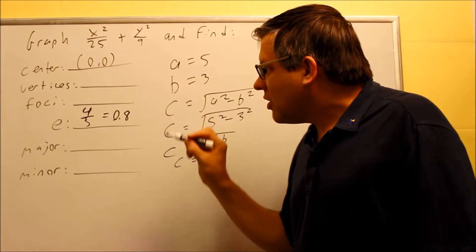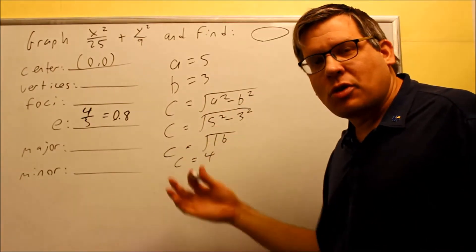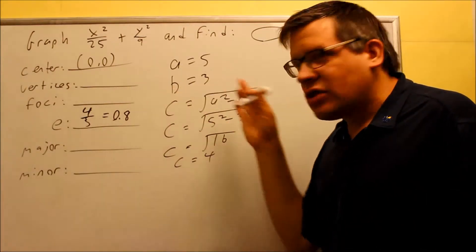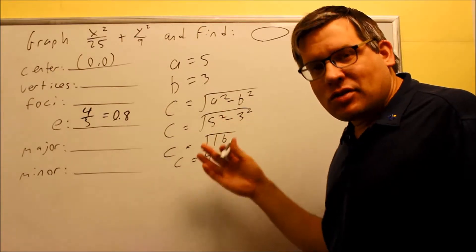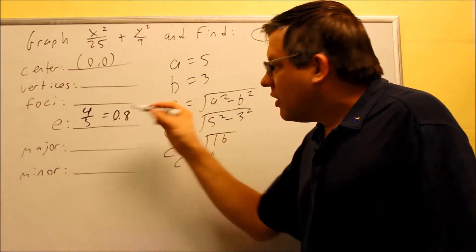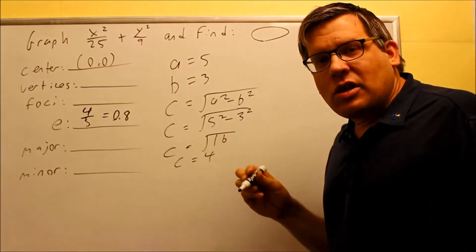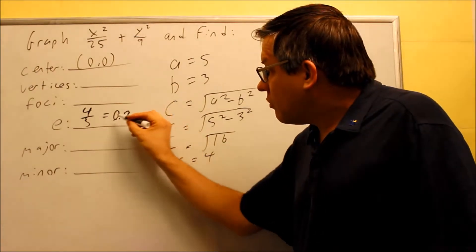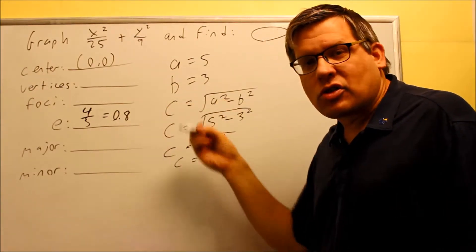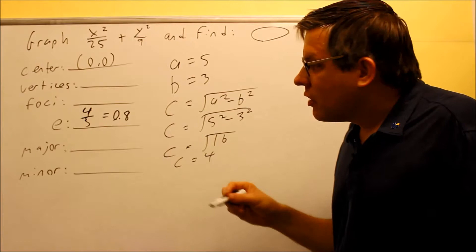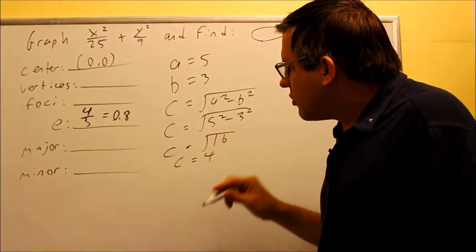So because it's 0.8, we should see it's fairly narrow. It doesn't look so much like a circle. And the other examples that we'll do in this section, we'll actually be comparing the decimal that we get, and you'll be able to see that if it's a number closer to 1, it's more narrow. If it's closer to 0, it's more rounded, okay? So it's 0.8 for this particular example.